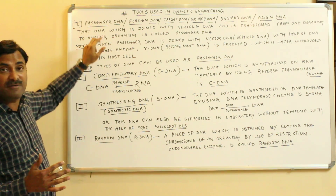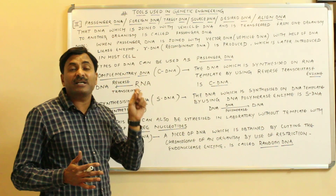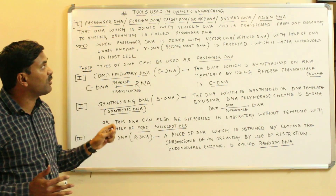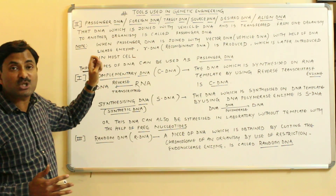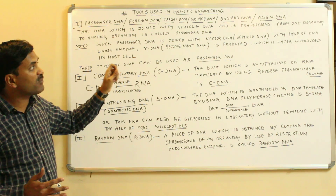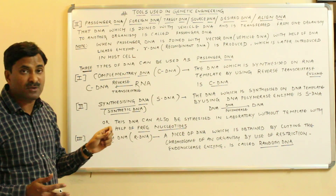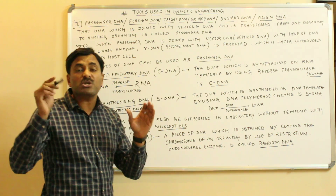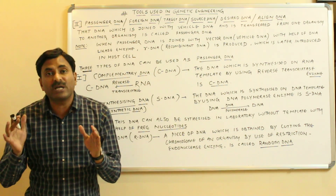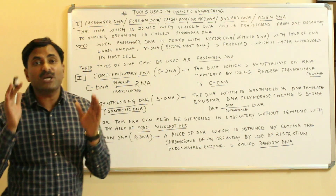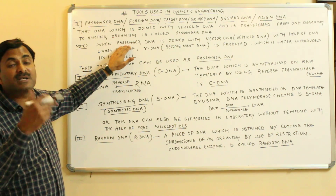The DNA which is joined with the vehicle DNA or the vector DNA and is transferred from one organism to another organism is called the passenger DNA. The most important technology in modern times used in genetic engineering is the recombinant DNA technology. When the passenger DNA or the desired DNA is joined with the vector DNA with the help of DNA ligase enzyme,